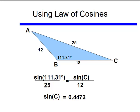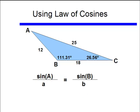Using my calculator I get the sine of C equaling 0.4472. Again I'll use my inverse sine function, so I can get that angle C equaling 26.56 degrees, and I'll put that in my triangle.